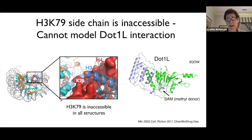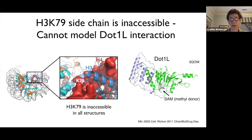Another mystery was how DOT1L could even access its substrate. We've had structures of DOT1L for 17 years, yet with all the structures of both DOT1L and nucleosomes, it was never possible to build a model for how DOT1L gets at the H3K79 side chain — because that side chain is very buried. You can try as hard as you can to dock the structures including changing side chain rotamers, and they simply don't fit together.